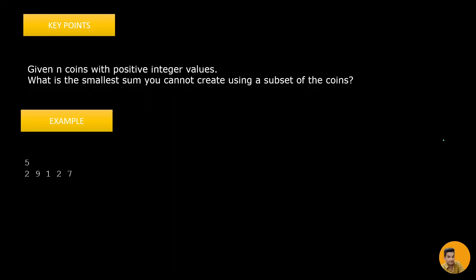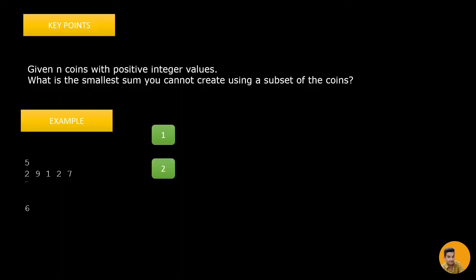So can we create 1? Looking through the list - 1 is here, so we can create 1. Can we create 2? Yes, 2 is present in the list so we can create 2. Now can we create 3? 3 is not present directly, but when you have 1 and you have 2, you don't need to think about whether you can create 3 - you can easily create 3. So we can create 3.